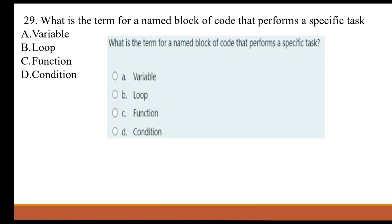What is the term for a named block of code that performs a specific task? A. Variable. B. Loop. C. Function. D. Condition.